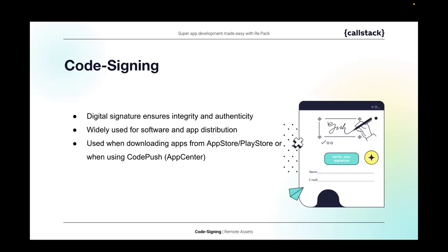In big enterprises security is a must, so we wanted a built-in solution in Repack to ensure better security. We decided to use an algorithm widely used in the industry — app distribution in the Apple App Store and Google Play Store use a similar technique to ensure that the code end users receive is actually the code the developer intended, without malicious tampering. We implemented it in a similar way to CodePush, which works in the same space.